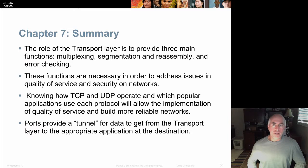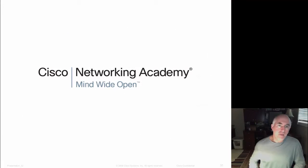In summary, the role of the transport layer is to provide three main functions. Multiplexing, or sharing a single shared line. Segmentation, which is the second one there, and then reassembly and error checking. These functions are necessary in order to address issues in quality of service and security on networks. Knowing how TCP and UDP operate and which popular applications use each will help you with troubleshooting and building better networks. Ports provide a tunnel for data to get from the transport layer to the appropriate application. Thank you.